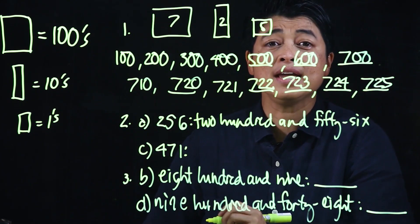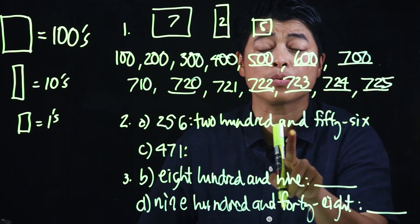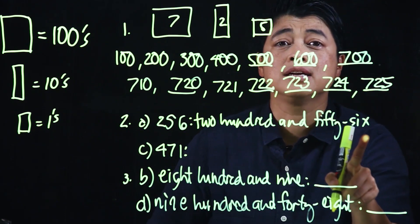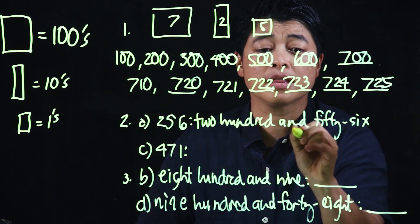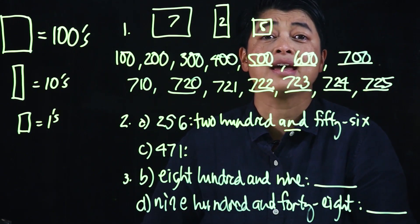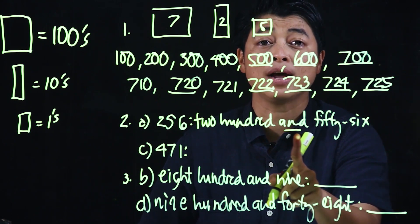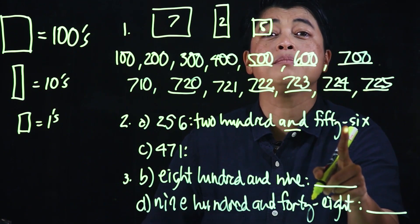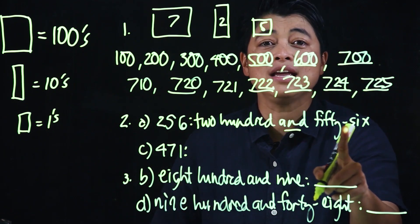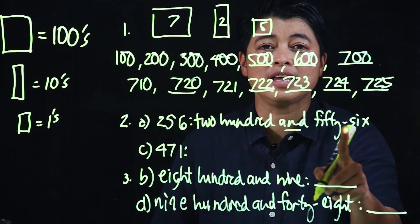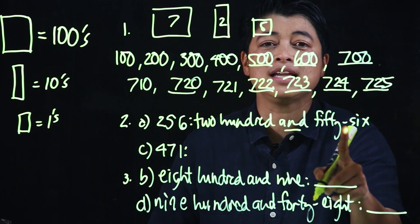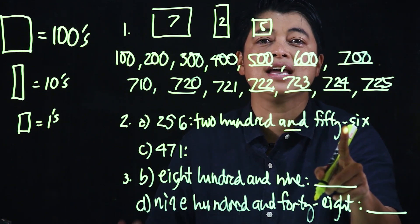So we as adults may not be used to using the word 'and' in between these, but in the book, they're expected to write the 'and'. Therefore, we need to teach them to write the 'and' as well. We need to have the dash as well in between 20, 30, 40, 50, 60, 70, 80, and 90.